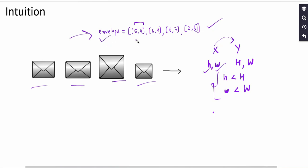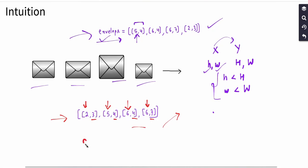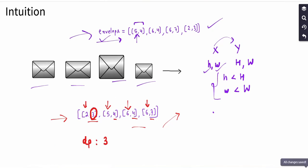We sort the array by the first integer, which is the width. After sorting the envelopes array by width, the widths are in increasing order. Now we need to check the second variable — the height. We declare an auxiliary dp array, start from the first element of the sorted envelopes array, pick the height of the first envelope, and push it into the dp array. So we have 3 inside the dp array.